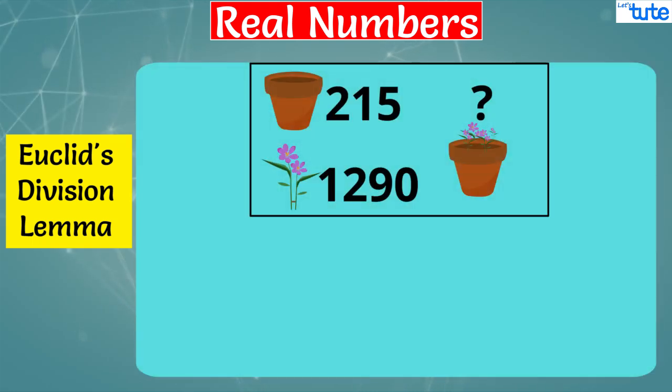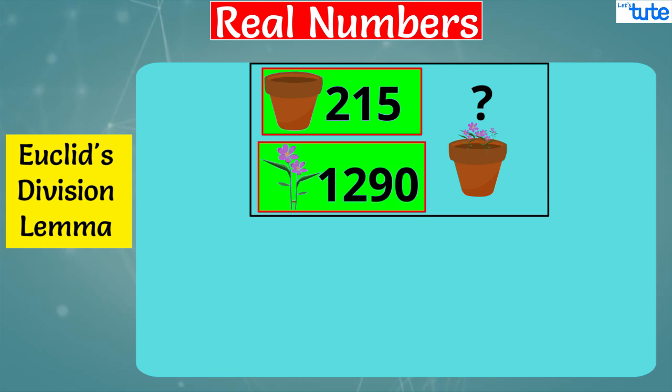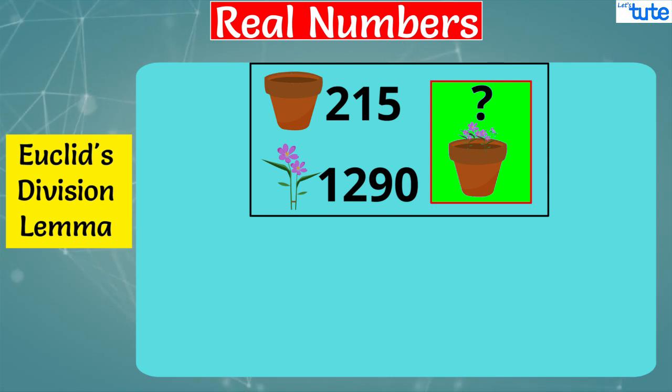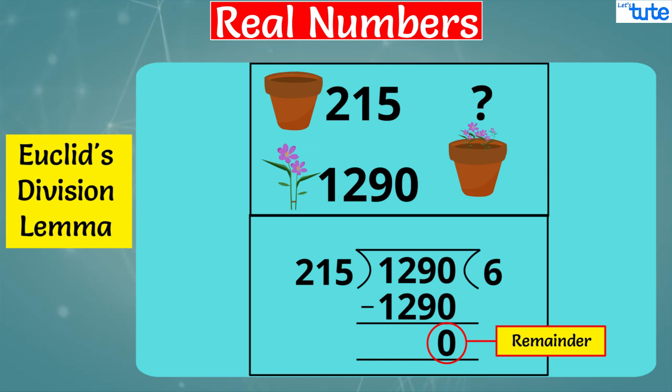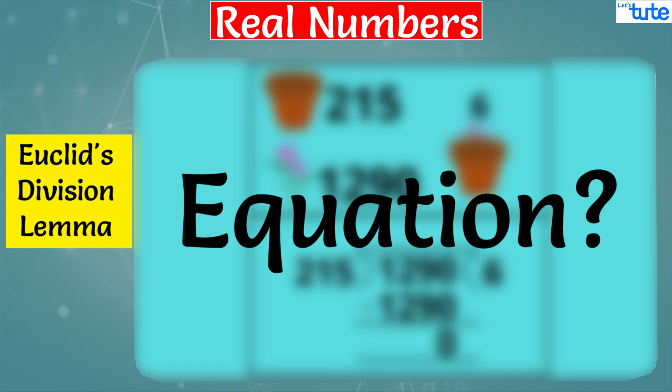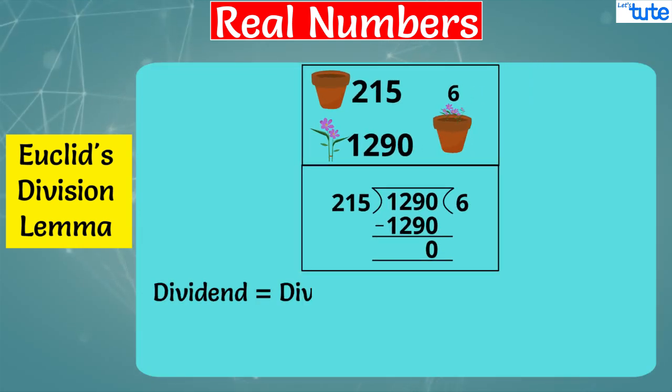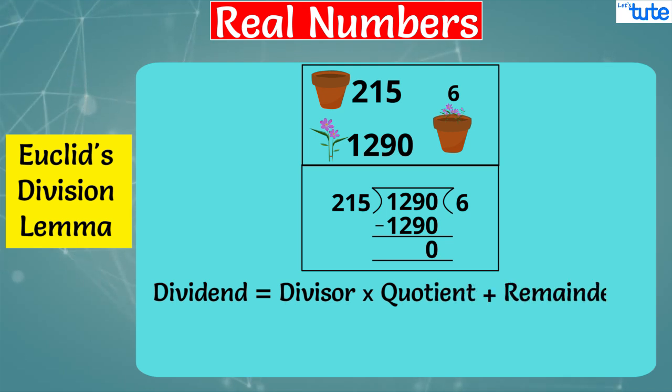Now let's understand this division lemma with the help of an example. Suppose if we have 215 flower pots and 1290 flowers, then what will be the maximum number of flowers in each pot? Here, we got remainder as 0, then the maximum number of flowers in each pot will be 6. But if we want to write it in the form of an equation, how can we write it? We write it as dividend is equal to divisor multiplied by quotient plus remainder, or A = BQ + R. So here, our equation will be 1290 = 215 × 6 + 0.